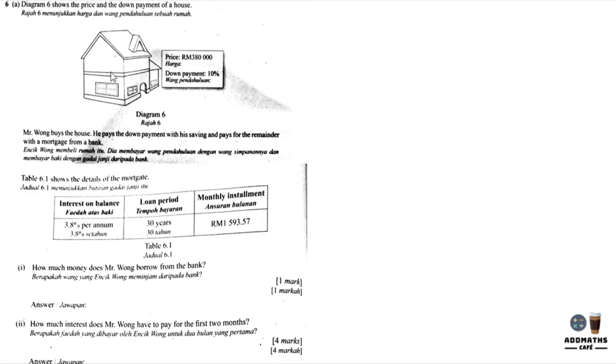Question 6 shows the price of a house and a down payment. Down payment means how much you need to pay for a house before you pay the full payment. Mr. Wong buys the house and pays his down payment with his savings and pays for the remainder with a mortgage. Mortgage means a loan.